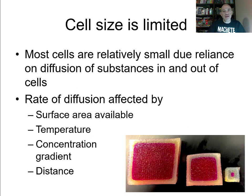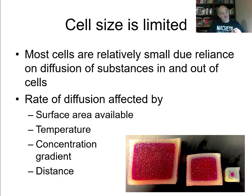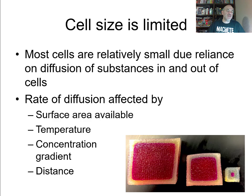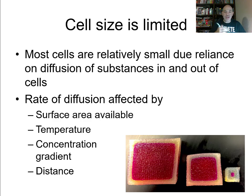Cell size is limited — most cells have to be really very small. One of the things that limits how big a cell can be is that a cell, as a living thing, requires fresh materials to come in, like nutrients and amino acids for proteins. The cell also has to get rid of waste generated deep within it. The bigger you are, the harder it is to get things all the way in and all the way out to the center of the cell, and that basically limits size.